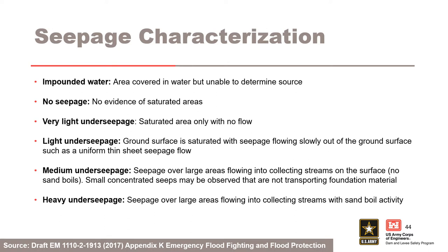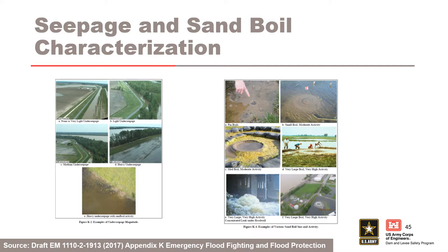The magnitude of under-seepage observed during a flood event is usually a good indicator of initiation of backward erosion piping. Generally, under-seepage conditions worsen as the river elevation rises and often respond relatively quickly to changes in river elevation. Under-seepage is generally estimated based on the quantity of seepage water emerging from the ground at the landside toe and landward of the levee. Consistent definitions of under-seepage are recommended for use in flood events so that consistent comparisons can be made between flood events and levee systems.